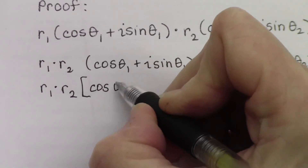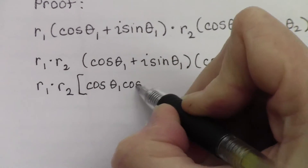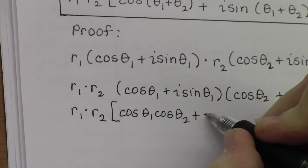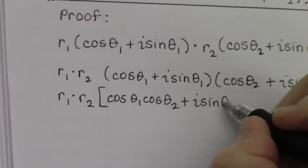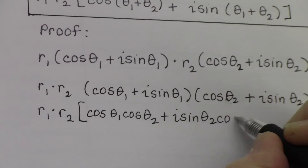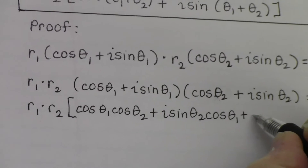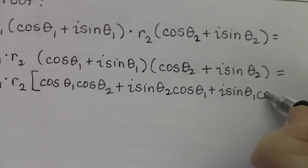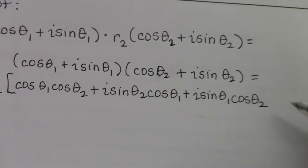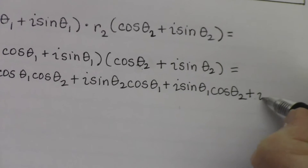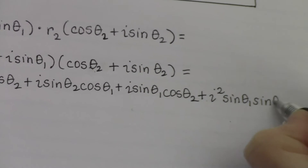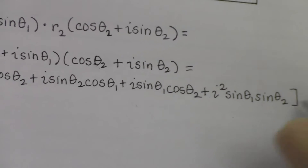The first times first gives cosine θ₁ times cosine θ₂. Then the outers give i times sine θ₂ times cosine θ₁. Then the inners give i times sine θ₁ times cosine θ₂. And the last times last term in each set of parentheses gives i² times sine θ₁ times sine θ₂. So that's a great big mess.